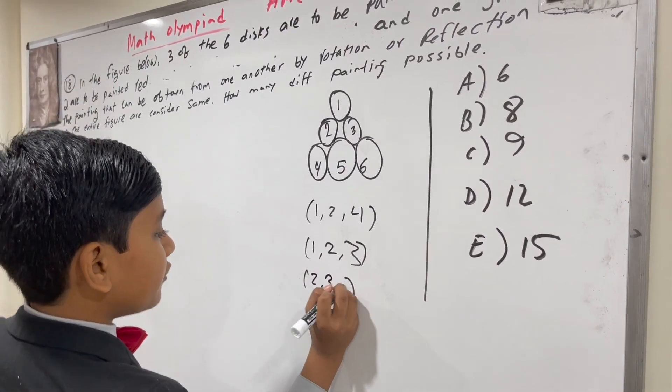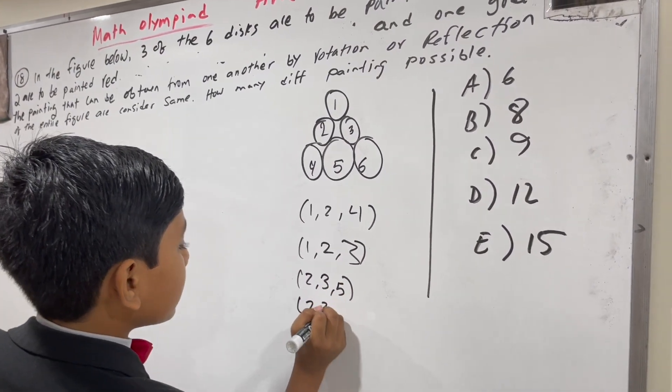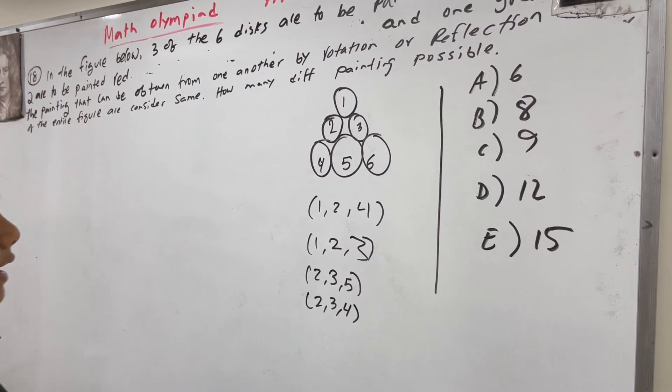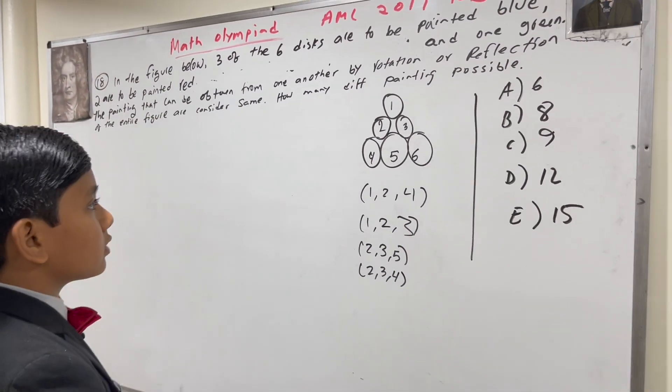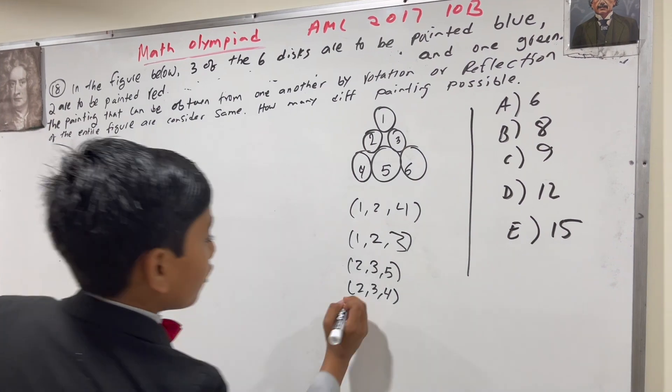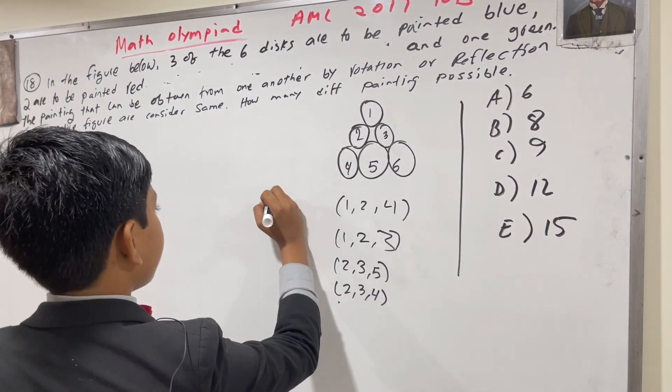You could have 2, 3, 5. 2, 3, 4. And, let's think of some others. You can't get 1, 3, 6, I believe, anyways.